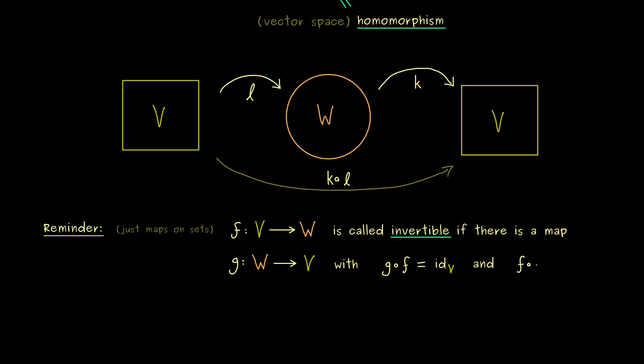And moreover we also have it the other way around. So we have f after g is also the identity map. However, there we start at W, so it's the identity map on W.